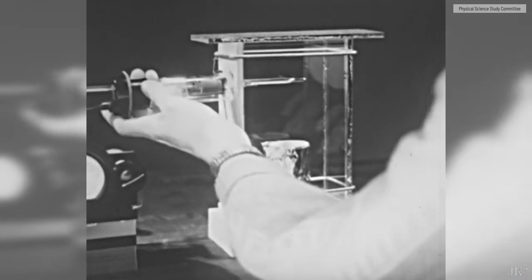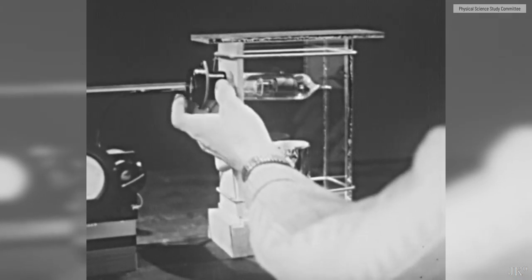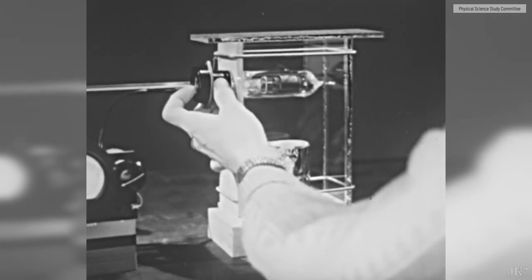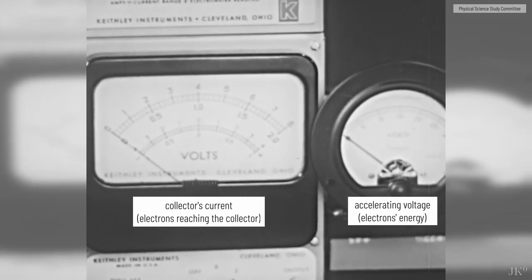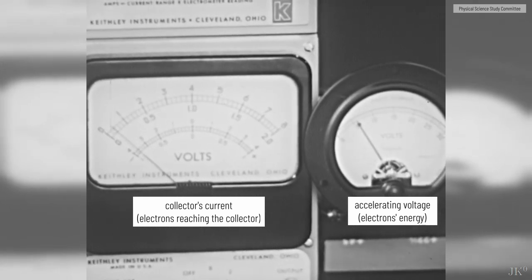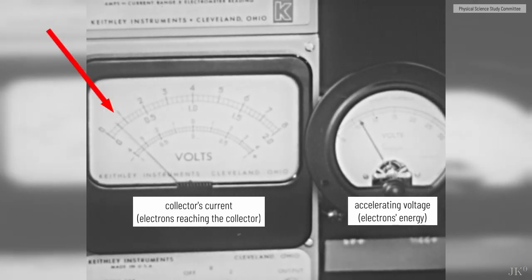Now we can introduce mercury atoms into the path of the electrons by placing the tube in this oven and heating it to about 160 degrees centigrade.